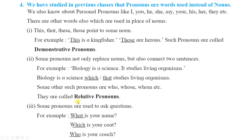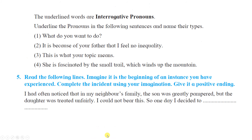Third type: some pronouns are used to ask questions. For example: 'What is your name?' 'Which is your coat?' 'Who is your teacher?' The underlined words — what, which, who — are interrogative pronouns because they are used for asking questions or doing interrogation. Now, underline the pronoun in the following sentences and name their types.